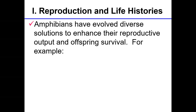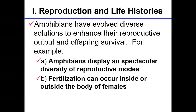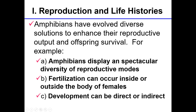Amphibians have evolved diverse solutions to enhance their reproductive output. Amphibians display a spectacular diversity of reproductive modes. Fertilization can occur inside or outside of the body of the female. Development can be direct or indirect. These three things should already be somewhat familiar to you as you've read about them in your field guides with respect to the natural history of our amphibians, whether they be salamanders, frogs, or toads.